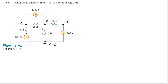This node here is 100 volts. Now let's assume the direction of the currents: this one is going to the right, this one is going down, this one maybe goes to the right, and this one is going up like this.